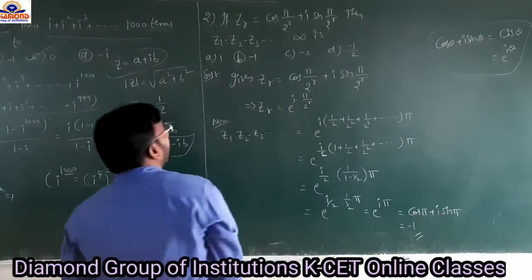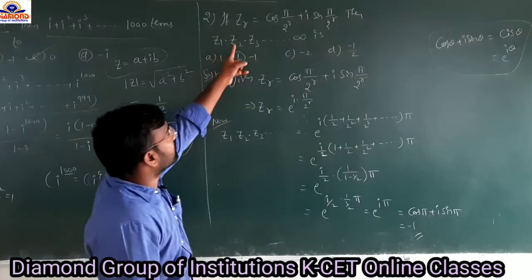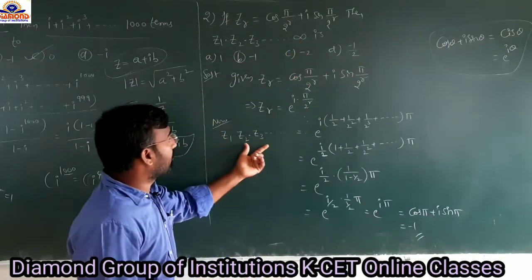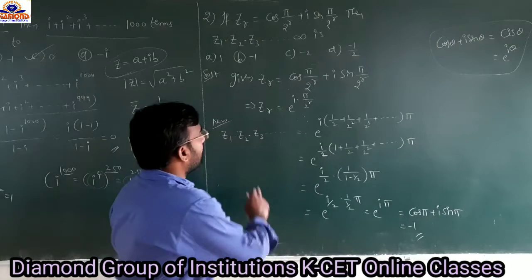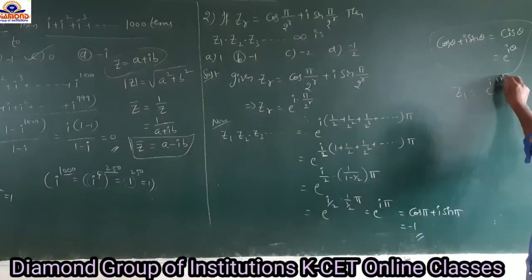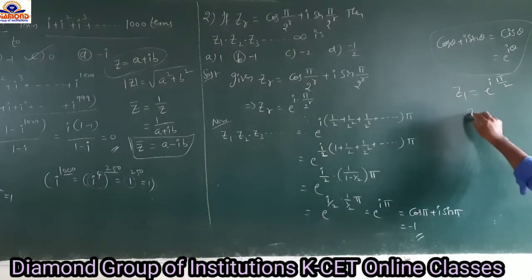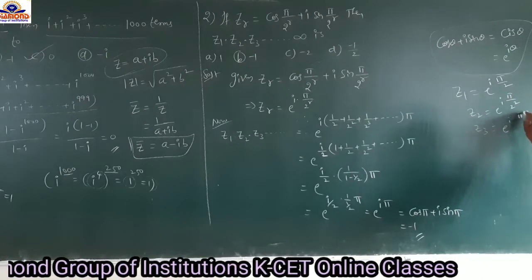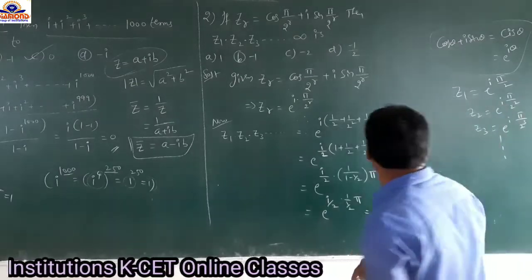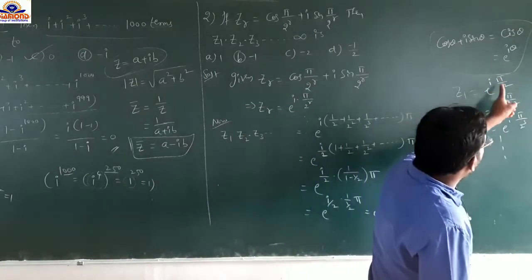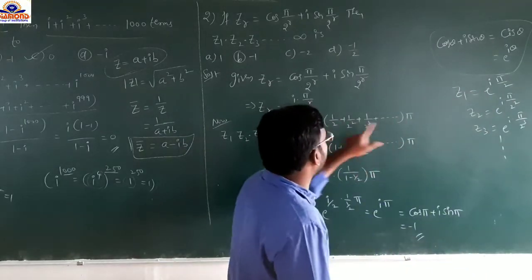Now calculating z₁ times z₂ times z₃ and so on up to infinity. z₁ equals e^(i·π/2), z₂ equals e^(i·π/2²), z₃ equals e^(i·π/2³), and so on. So taking i·π common, we get e^(i·π) common outside.